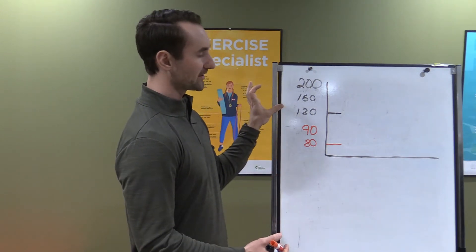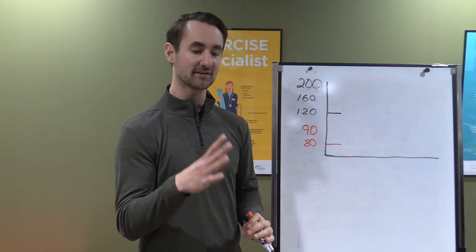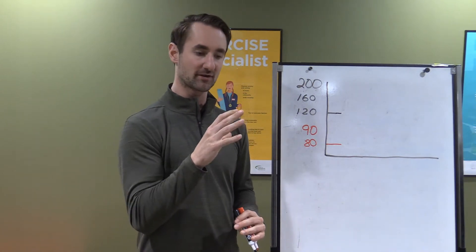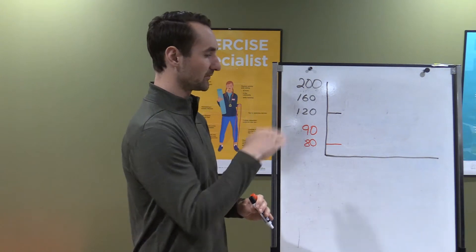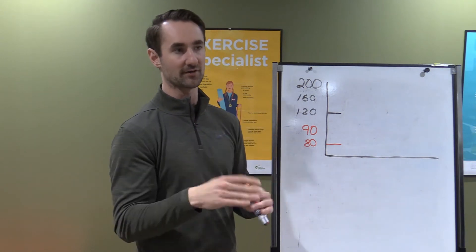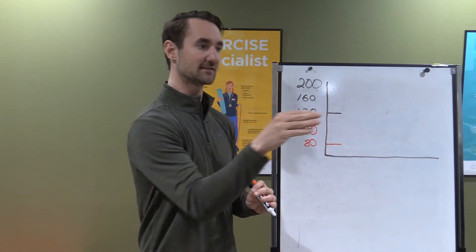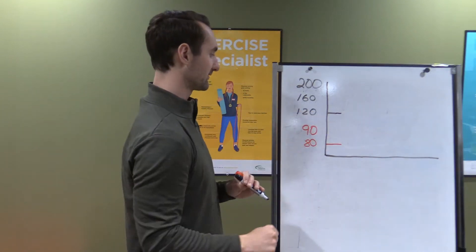The systolic pressure is the pressure in your arteries when your heart contracts, and the bottom number is the pressure in your arteries when your heart relaxes. The blood flow goes through your arteries in a waveform of blood and then relax, blood and then relax, and that's how it's flowing.